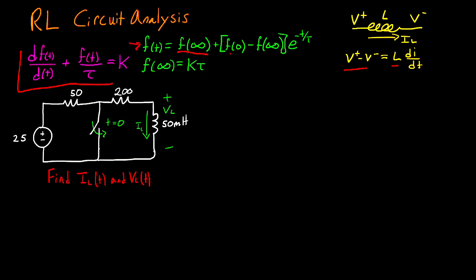the solution to that is going to be that f of t is equal to the final condition, f of infinity, plus the initial condition, f of 0, minus the final condition again, multiplied by e raised to the negative t divided by that constant tau.